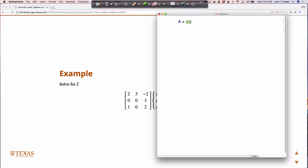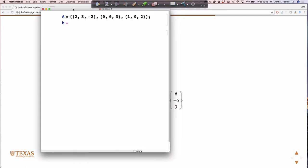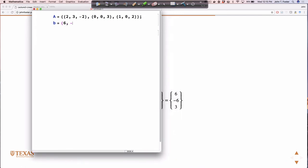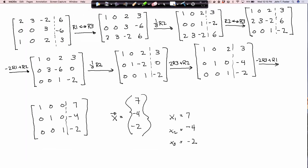A equals 2, 3, minus 2, 0, 0, 3, 1, 0, 2. B equals 6, minus 6, 3. The solution is 7, minus 4, minus 2.